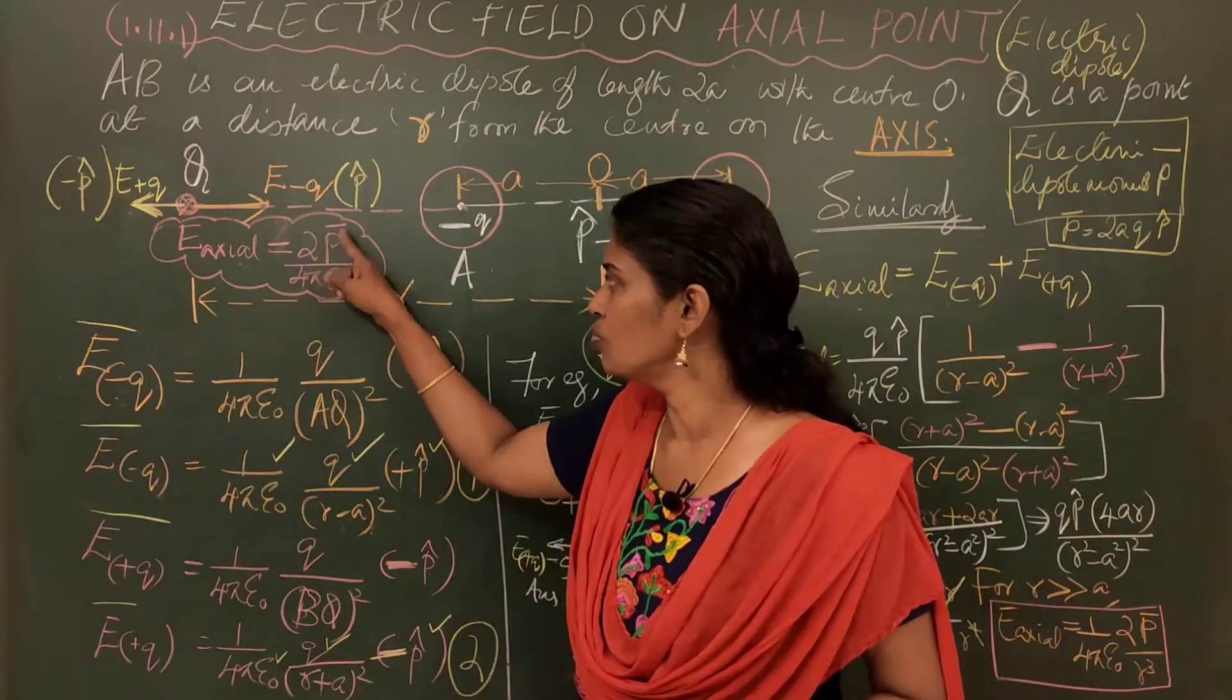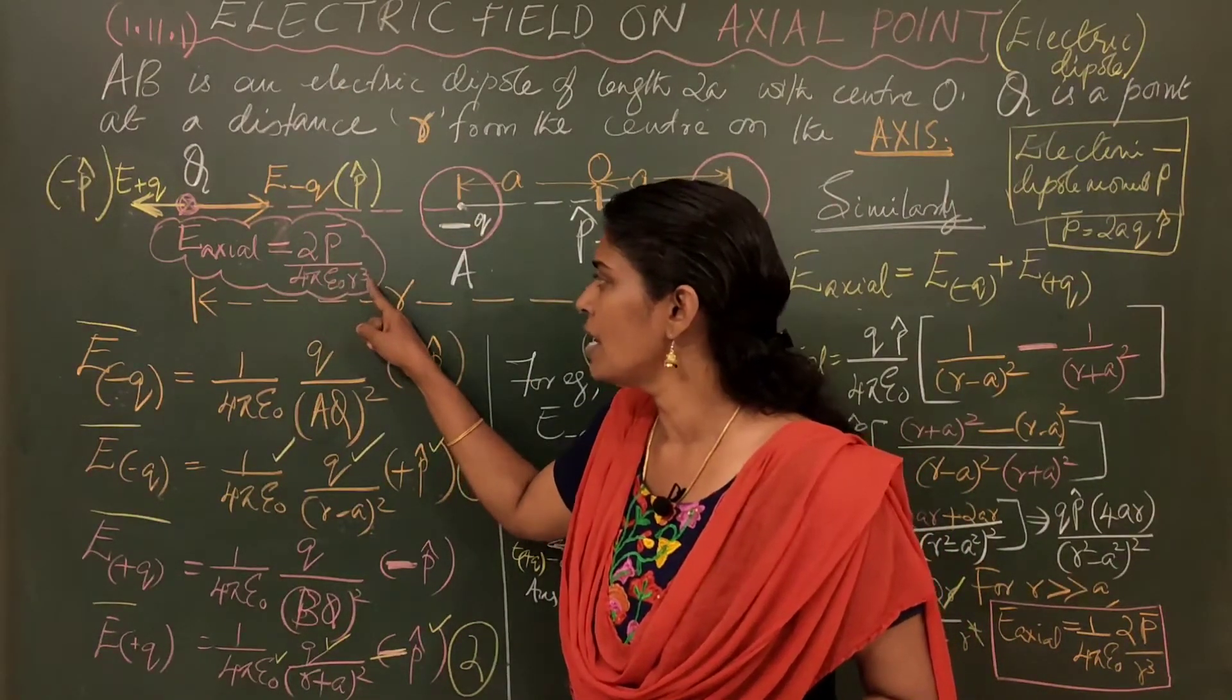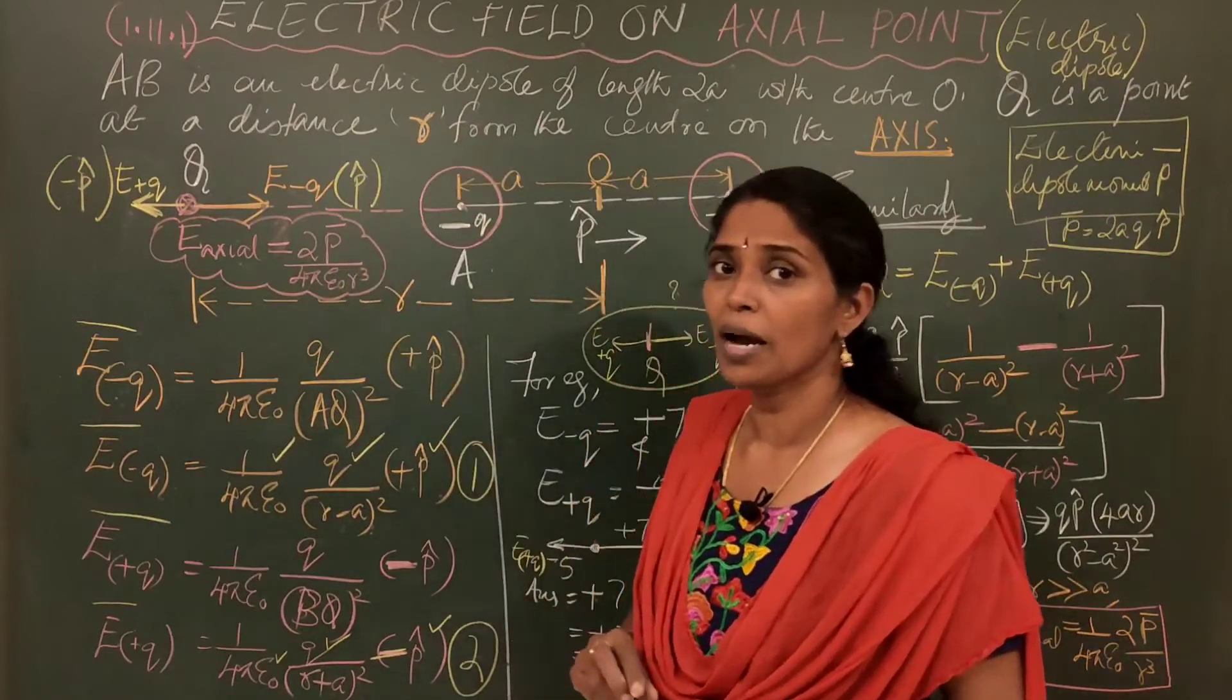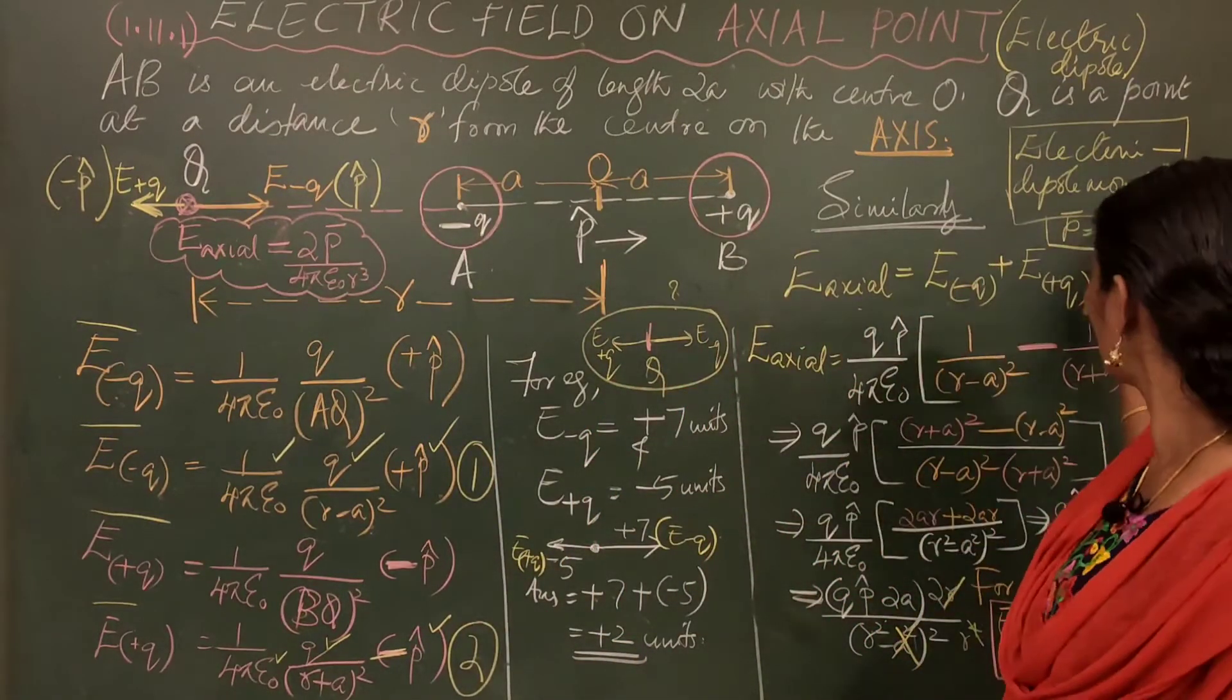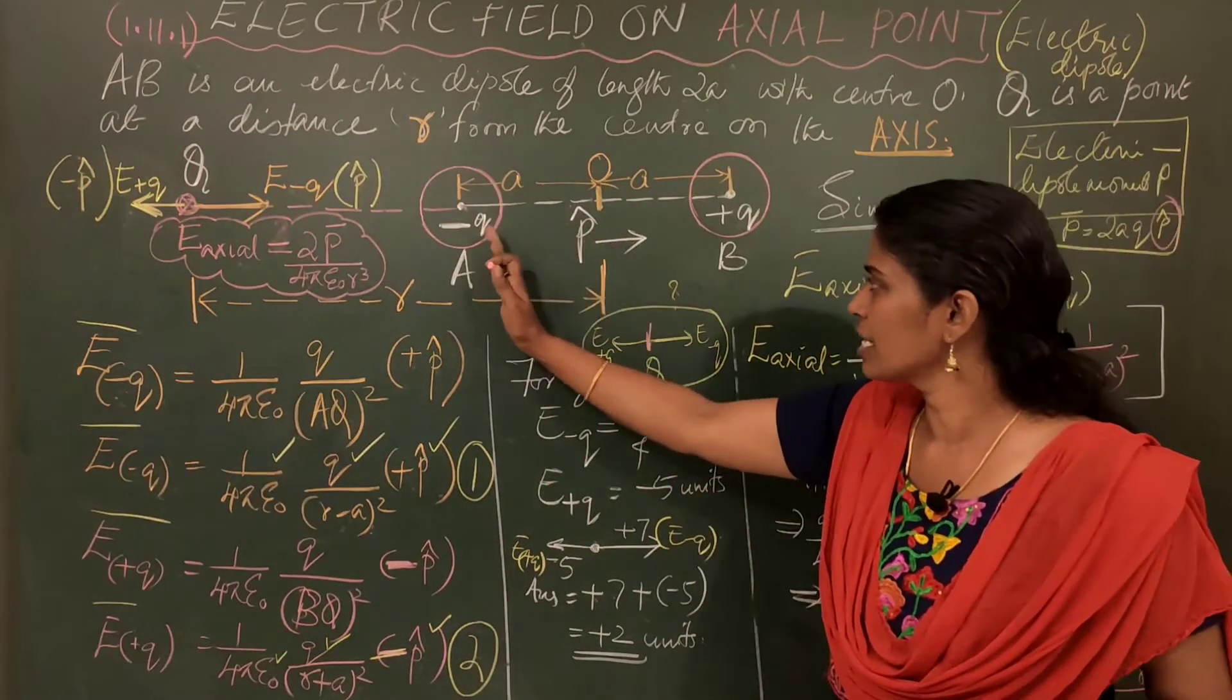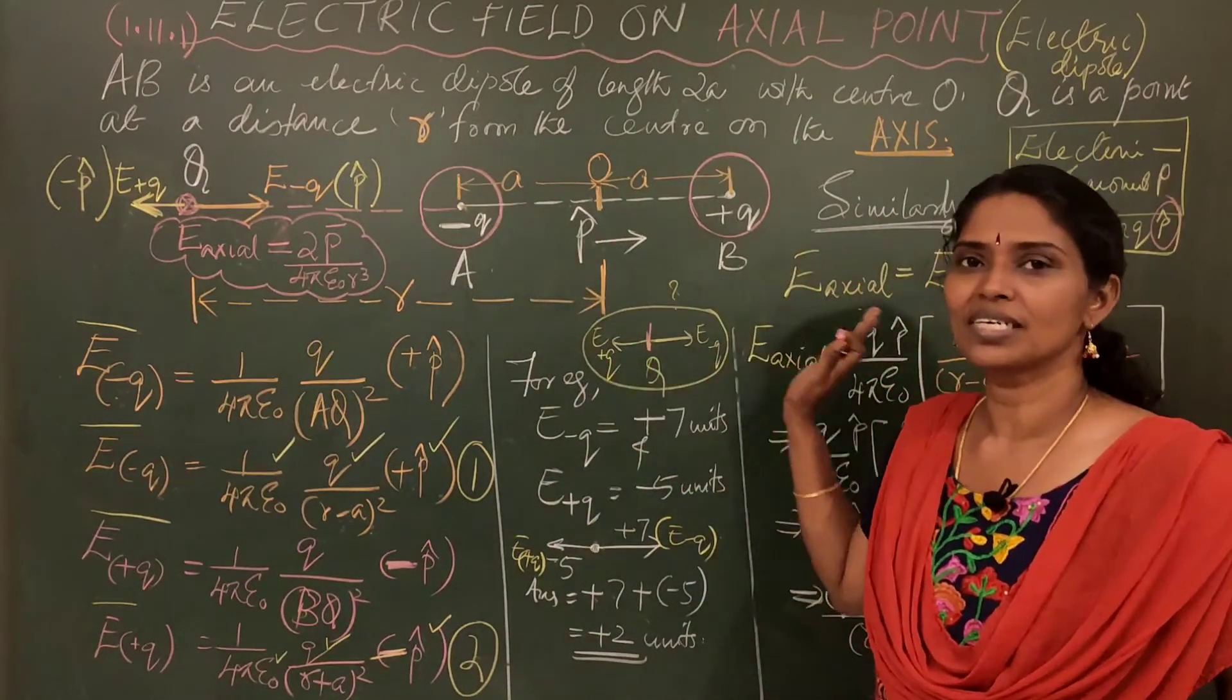Because the answer is 2P bar by 4 pi epsilon 0 R cube. And what is P cap? P cap I told you. What is P cap? P bar is 2A Q by P cap. What is the direction of P cap? Towards right.